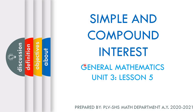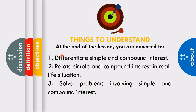In this video, we will discuss Simple and Compound Interest, Unit 3 Lesson 5 for General Mathematics. These are the things to understand: first, we need to differentiate Simple and Compound Interest; second, relate Simple and Compound Interest in real-life situations; third, we need to solve problems involving Simple and Compound Interest.